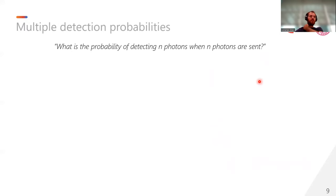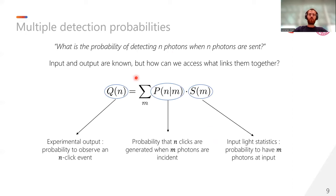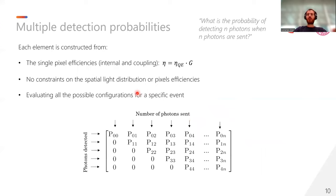But when we are dealing with PNR detectors, we would like to be able to answer the following question: What is the probability of detecting n photons when n photons are sent on the device? Namely, we would like to be able to connect the photon counting statistic of the detector with the incoming light statistic that we are sending on the device. These two quantities are connected by the probability that the detector generates an n-click when m photons are arriving on it.